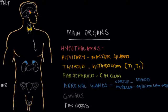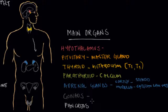Moving further down the list, we have the gonads — ovaries in females and testes in males. The gonads are stimulated by the pituitary's release of FSH and LH, which are follicle stimulating hormone and luteinizing hormone. The gonads then take that stimulation and release the sex hormones: in females, mostly progesterone and estrogen, and in males, testosterone.